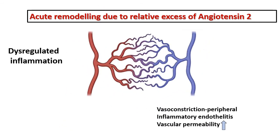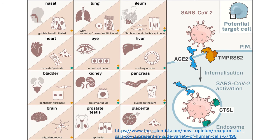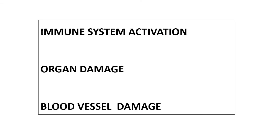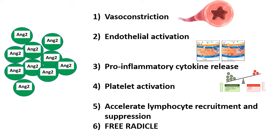This is how your vasculature is going to look. There will be dysregulated inflammation, remodeling, vasoconstriction, and increased vascular permeability. One thing to understand is that the ACE2 receptors are not only present in the respiratory tract; they are present in many organs, but one of the most common manifestations is going to be in your lungs compared to other organs. This will lead to immune system activation, organ damage, and blood vessel damage. As the angiotensin level increases, we will be having vasoconstriction, especially in the smaller vessels including the capillaries. There will be high levels of angiotensin-2 which will lead to endothelial activation. There will also be a lot of cytokine release, platelet activation, and free radical damage.